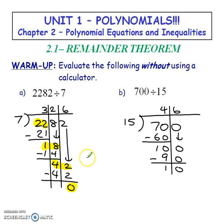7 times 6 is 42 and you get a remainder of 0. If you get a remainder of 0, that means that 7 went into this number evenly, which means that 7 is one of the factors of this number. If we take a look at the other example, it has a remainder of 10, which means that 15 did not divide 700 evenly. It means that it's not a factor of 700.